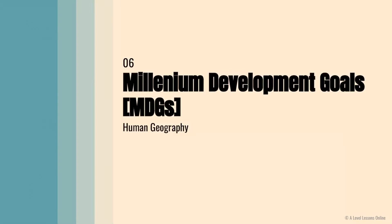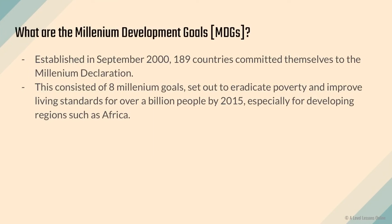So what are the MDGs? The Millennium Development Goals were developed in 2000 — September 2000 — when 189 countries committed themselves to the Millennium Declaration. Essentially, they committed to achieving the Millennium Development Goals by 2015. The MDGs consisted of eight different goals set out to eradicate poverty and improve living standards for over a billion people by 2015.